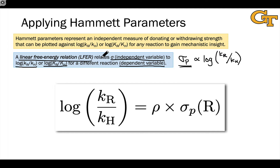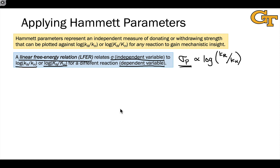It's called a free energy relation because the logarithm of this ratio is essentially a free energy. It relates back to the law of mass action and how delta G and activation energy are related to equilibrium constants and rate constants respectively, which ties back to introductory chemistry. That's pretty much why it's called a free energy relation, and as mentioned, this gives us great mechanistic insight.